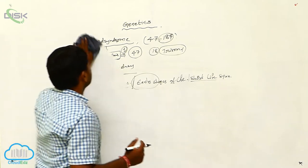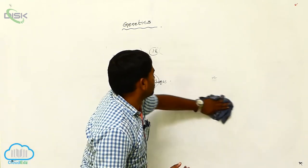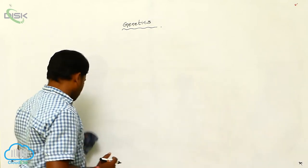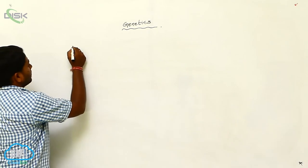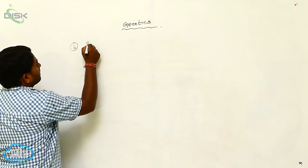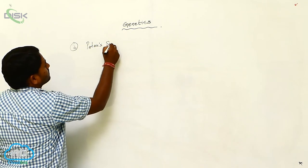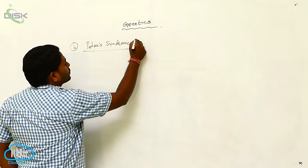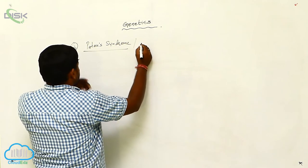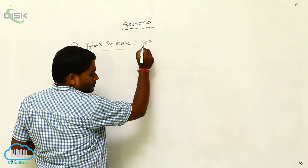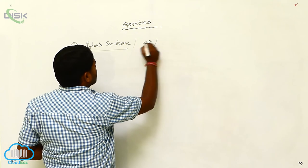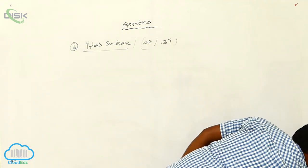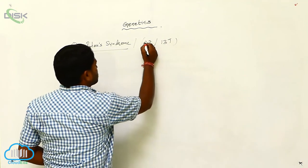The third autosomal disorder is Patau's syndrome. In Patau's syndrome, the total number of chromosomes is again 47, and it is trisomy of the 13th chromosome — meaning three copies of chromosome 13 are present.